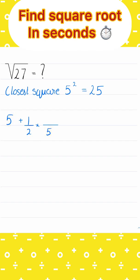Now you need to take the difference of the number whose square root has to be found with the closest square, which in this case is 27 minus 25, and the difference comes out to be 2.